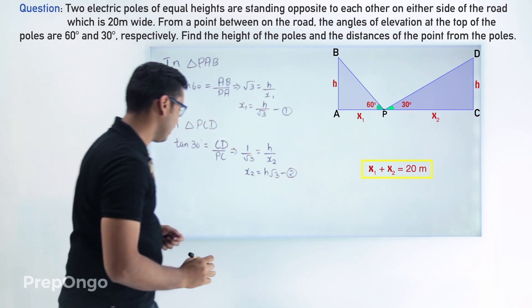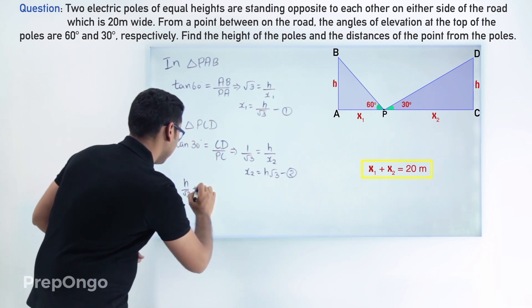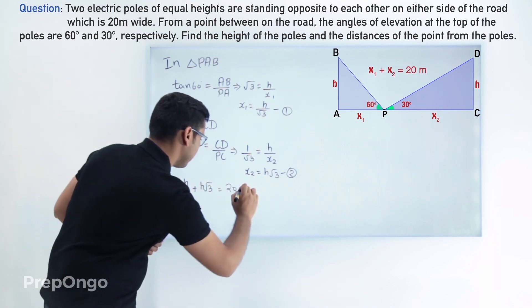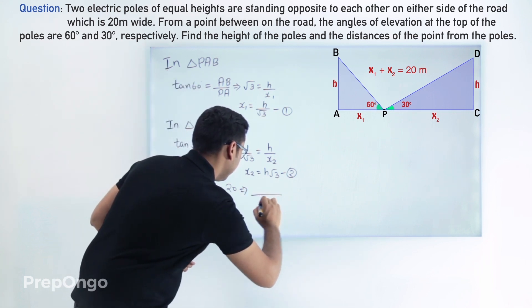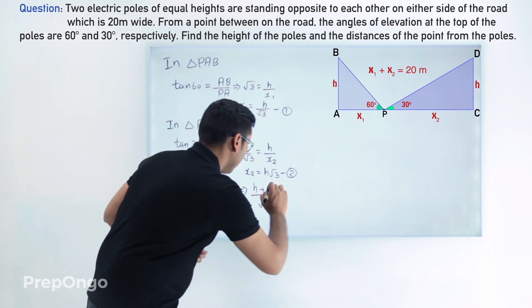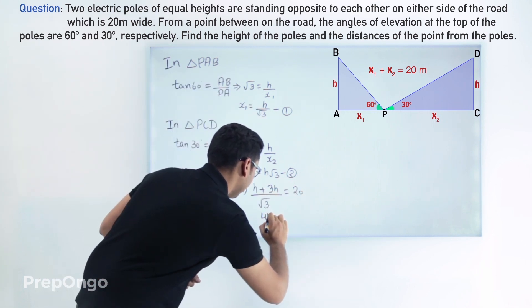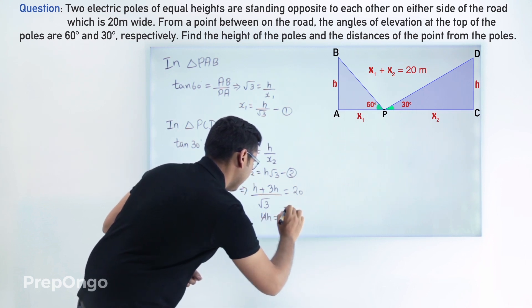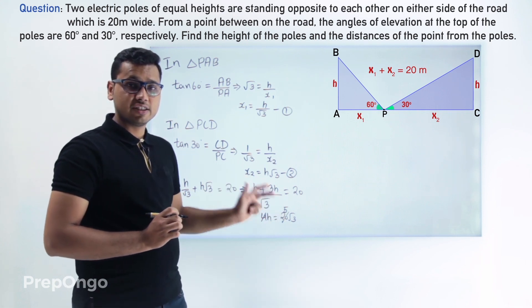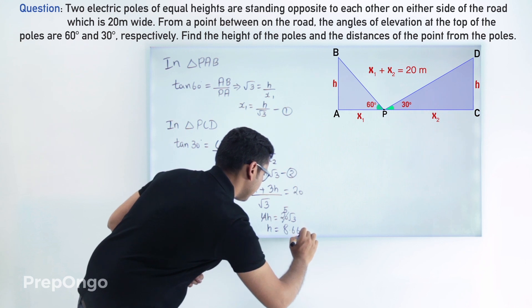Let's call x1 plus x2 equals 20 equation 2. Substituting the values: H over root 3 plus H root 3 equals 20. Taking the LCM as root 3, this becomes H plus 3H all over root 3 equals 20, so 4H equals 20 root 3. Solving, H equals 5 root 3. Putting the value of root 3 as 1.732, H equals 5 times 1.732, which gives H equal to 8.66 meters.